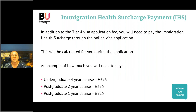In addition to the Tier 4 visa application fee, you must also pay the Immigration Health Surcharge when going through the online application form. This is not optional — you must pay it even if you have private medical insurance, and it will be calculated for you during your application. For a four-year undergraduate course the fee is £675; for a two-year postgraduate course it's £375; and for a one-year postgraduate course it's £225. You must pay this before you can submit your full Tier 4 application.